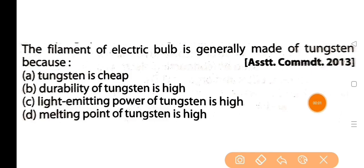Next question: the filament of an electric bulb is generally made of tungsten — bohutrik bulb or filament tungsten ere gothita — because option D: the melting point of tungsten is high. Tungsten's chemical symbol is W.